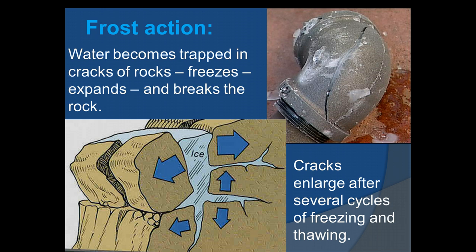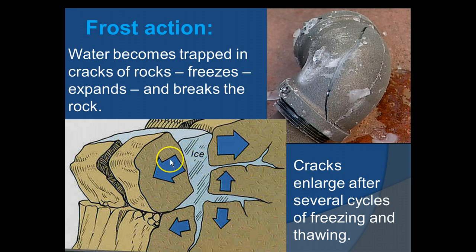If you've been near cliffs, you'll see rock fall at the base — it's called a talus field. That results from ice wedging: water gets in, freezes, expands 10%, and falls down. You get more ice wedging in areas that are cold enough to freeze but also warm enough to melt.